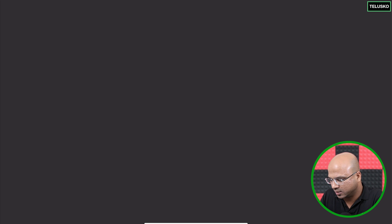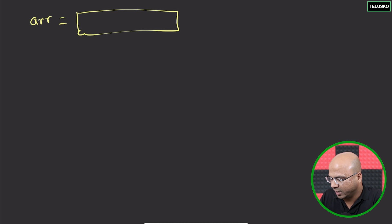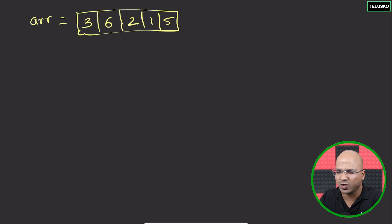Let's name this array 'arr' and give it some values. We'll take five values: three, six, two, one, five. So we have these five values to work with.